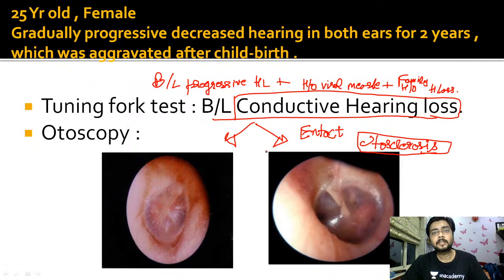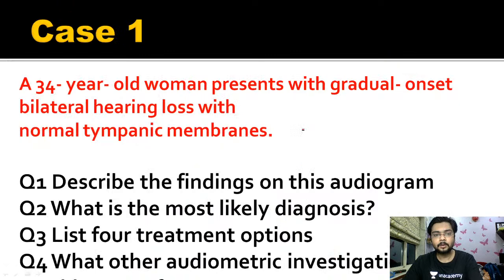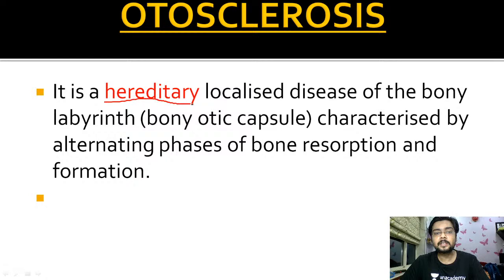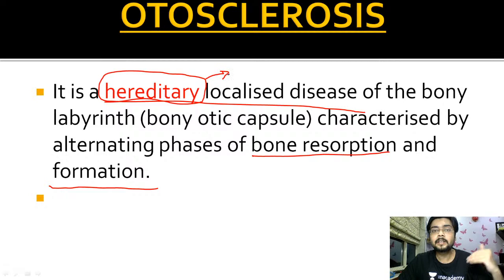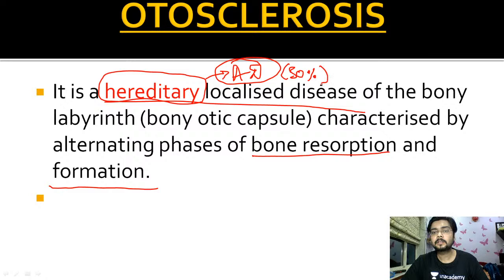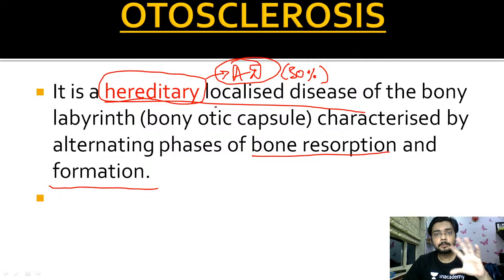Whenever your examiner gives you these types of hints, remember that what has come to you is otosclerosis. Otosclerosis is a hereditary, localized disease of the bony labyrinth characterized by alternating phases of bony resorption and formation. To simplify: 'hereditary' means it has an inheritance pattern. It is inherited as autosomal dominant, and in 50% of cases it has an autosomal dominant character.